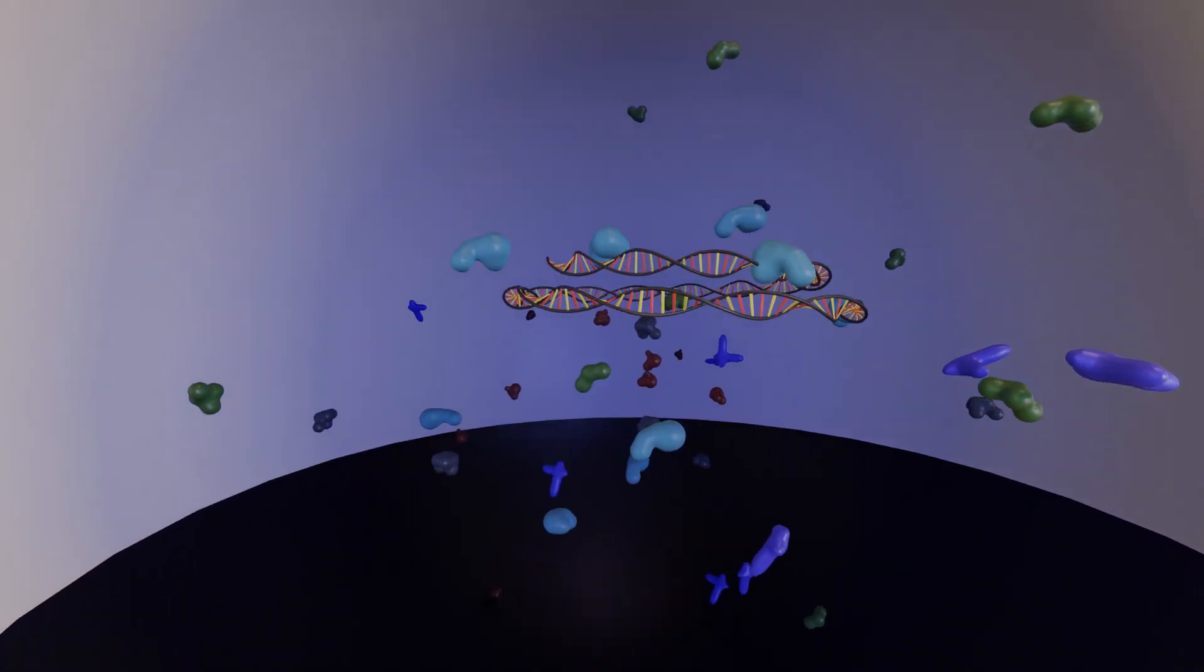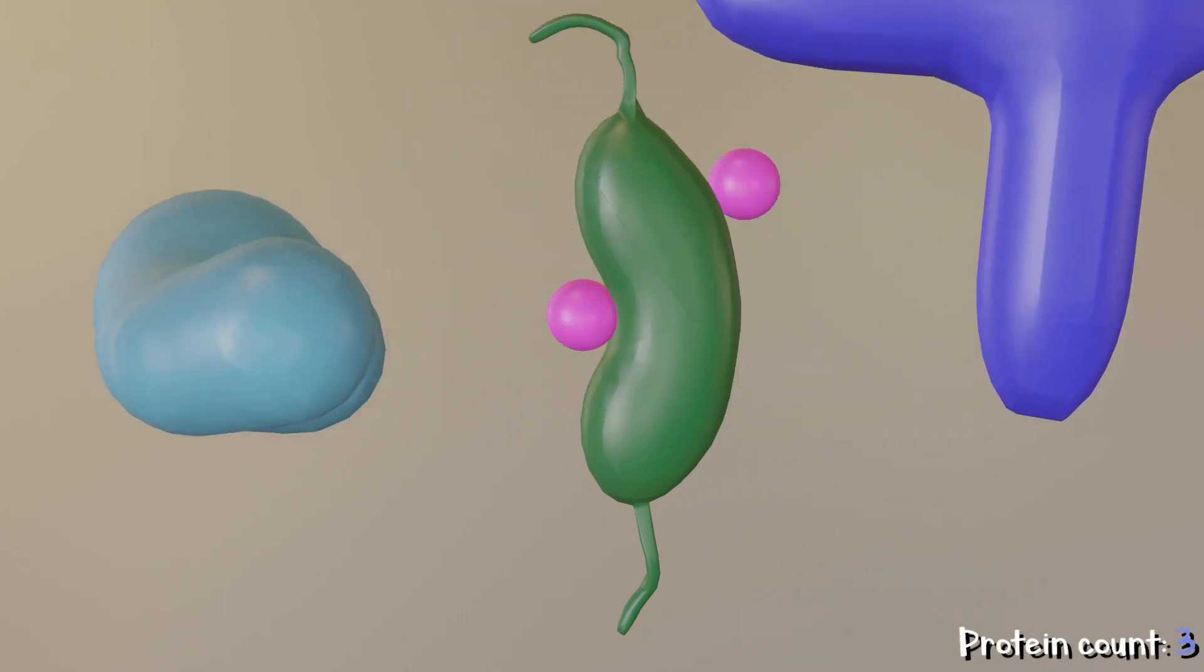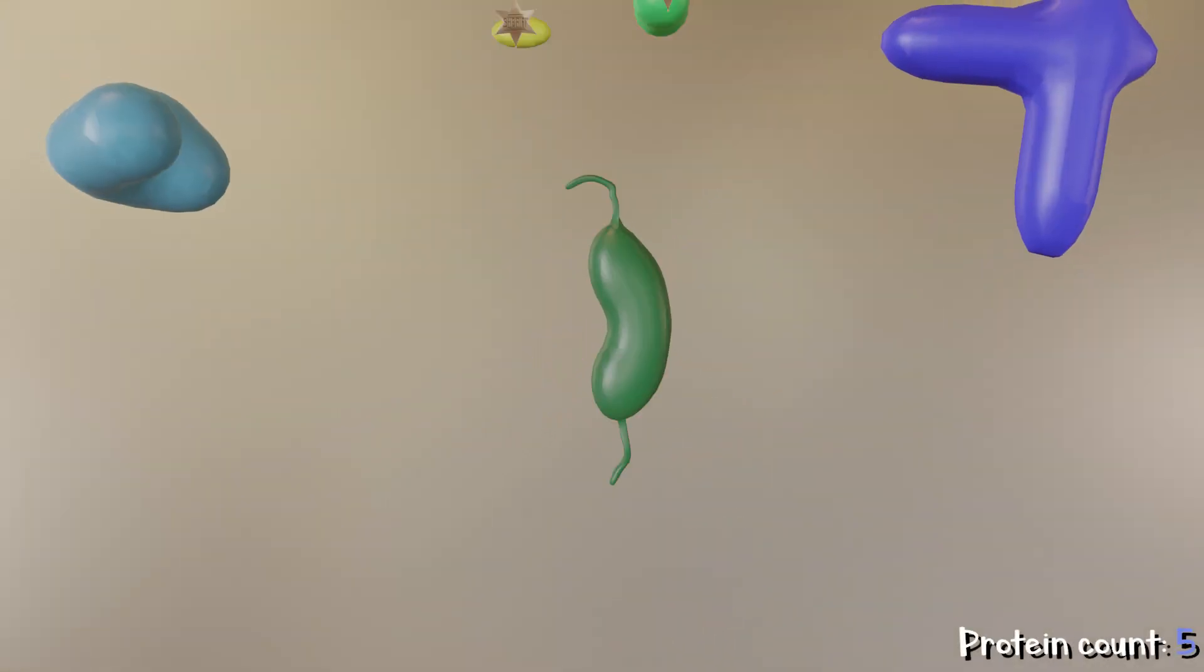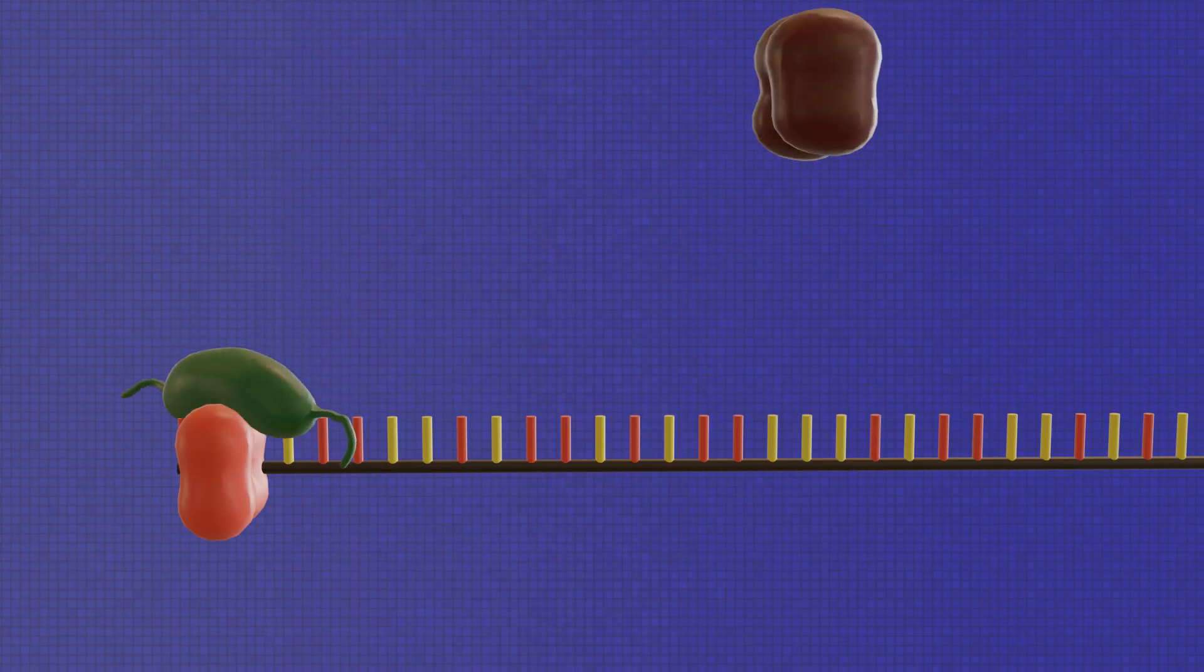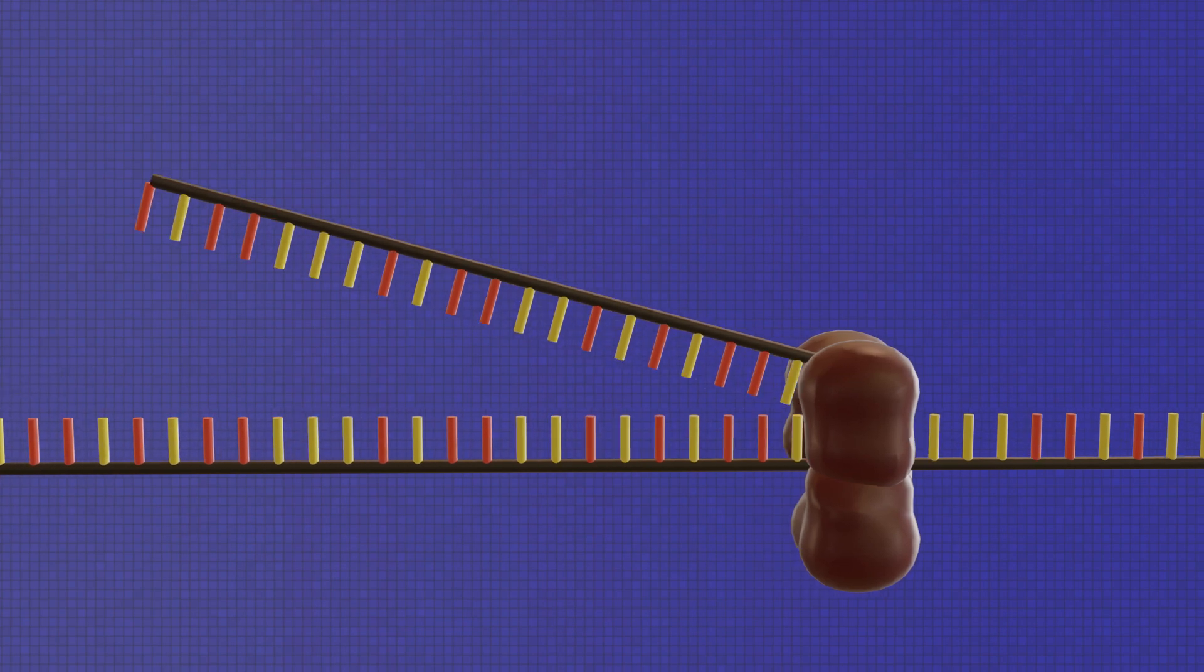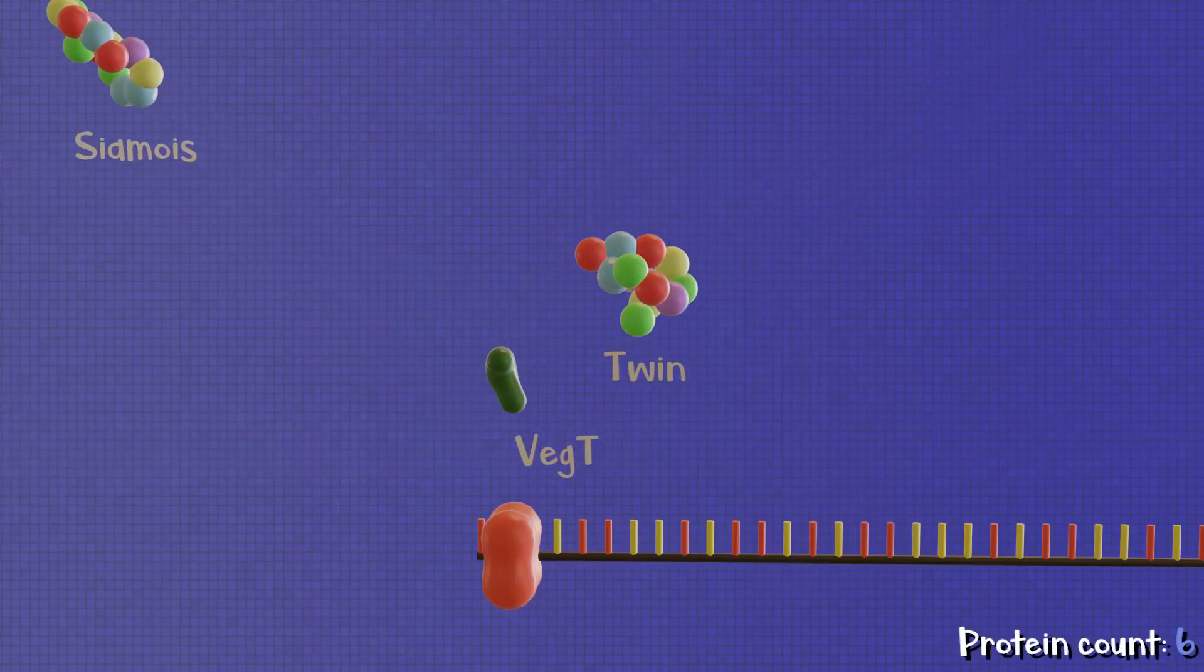Normally beta-catenin is found everywhere in the cell, but it's also constantly being hunted and broken down by two other proteins. There are some sheriff proteins that can prevent this, but they only exist in the vegetal region, which means beta-catenin can do its job here. But unfortunately, its children proteins become deactivated by another protein that only exists in this region.